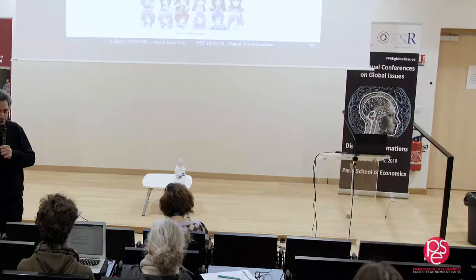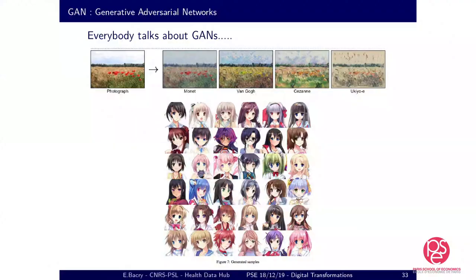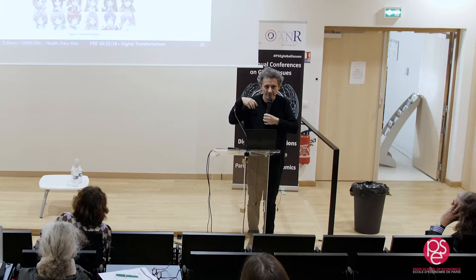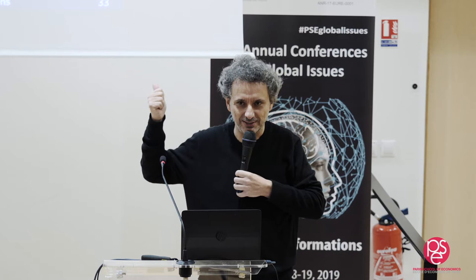Today everybody's talking about GANs — Generative Adversarial Networks — where you have two networks fighting against each other. One is trying to fool the other, and you use the fooler to generate content that looks like the truth. That's how you can generate realistic images. It's very common today, but very hard to train. I'm almost sure nothing is in production using these networks because the optimization problem is really awful to solve.